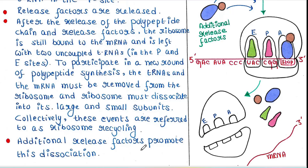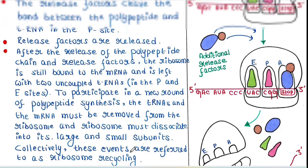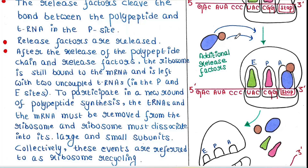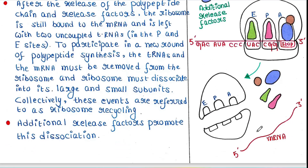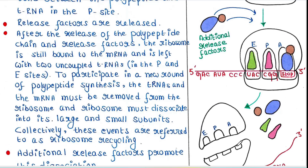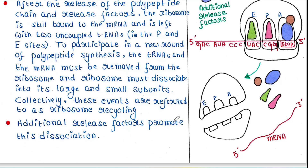Additional release factors promote this dissociation. After they bind, everything dissociates: the additional release factors are released, the two uncharged tRNAs are released, the mRNA is released, and the small and large subunits of the ribosome dissociate from each other. They are then all ready to start the next round of translation.